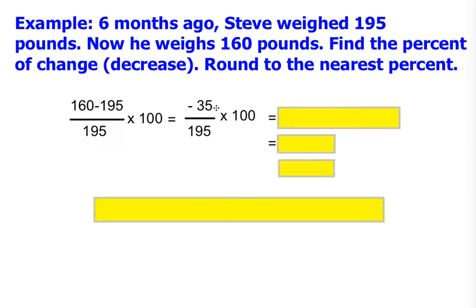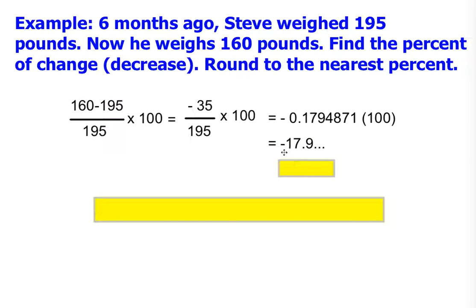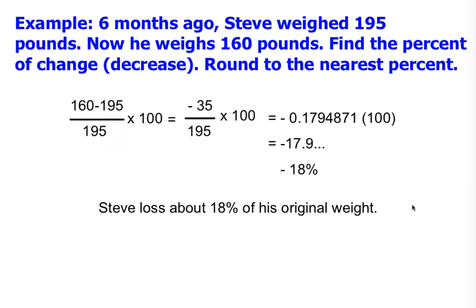Let's do the math: negative 35 divided by 195, times 100. This gives a long decimal, and once you multiply by 100 you get negative 17.9. Since we're rounding to the nearest percent, the only decimal we need is the tenths place. Applying rounding rules, because the tenths value is 9 — which is 5 or higher — that increases the 7 to an 8. So Steve lost 18% of his original weight.